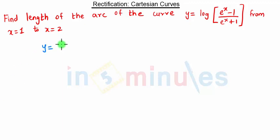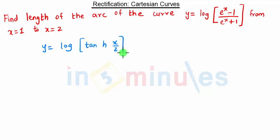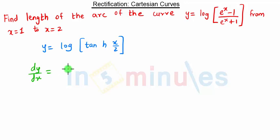We have y equal to log of tanh(x/2). We converted the expression into this form because our derivative will become simpler. Now dy/dx will be 1 upon — since the derivative of log of something is 1 upon that something —